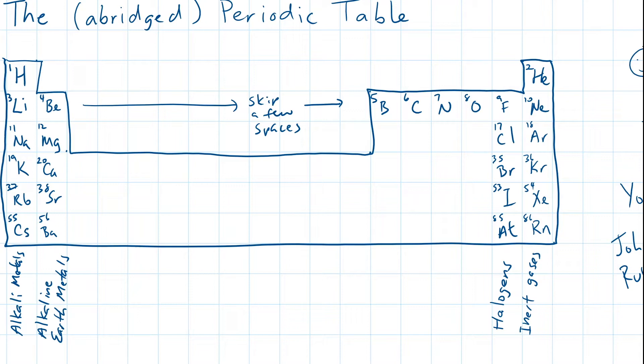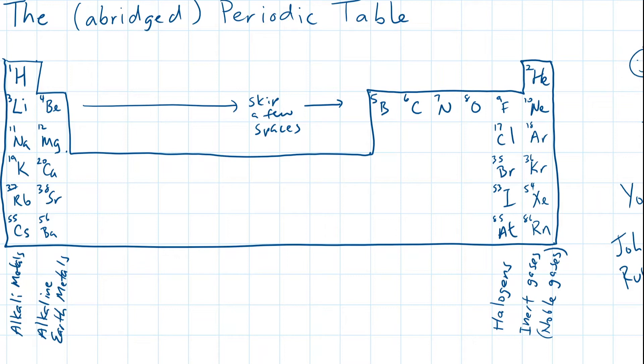Another notable pattern is that all metallic elements or metals can be found on the left side of the periodic table and non-metals can be found on the right.